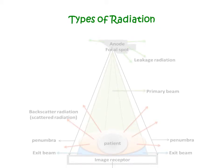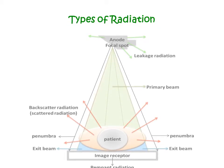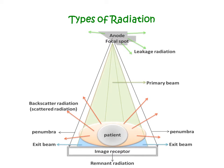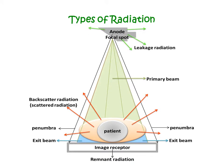Leakage radiation is emitted through the tube housing, shown by the yellow-green arrow. Scatter radiation, or backscatter radiation, occurs when the primary beam hits the patient and the x-ray beam is deflected backward. This is produced by the Compton effect, where x-rays that have interacted with an object or patient are deflected backward.